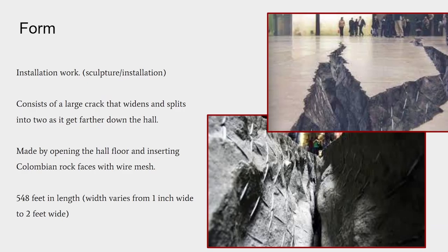As for the form of this work, it is very simple. It's generally just a crack in the ground that falls between the categories of installation and sculpture. The crack as it goes down the hall gets thicker in width and eventually splits into two separate cracks. This work was made by opening the floor that was already in the hall and inserting Colombian rock faces with wire mesh to detail the work as well as hold it in place as a utilitarian function. The work itself is 548 feet in length and the width of the crack ranges from 1 inch to 2 feet wide.